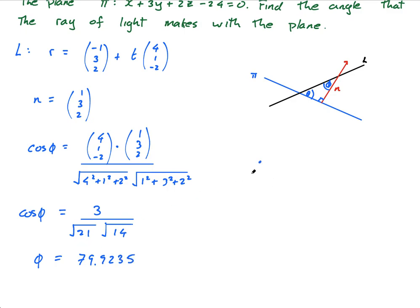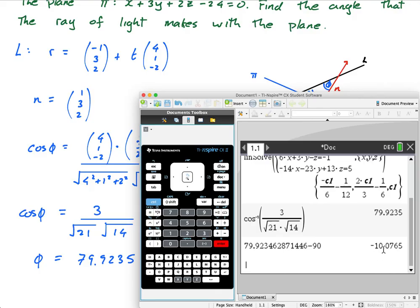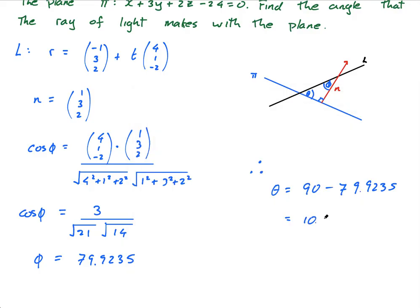Therefore, theta equals 90 minus 79.9235, which equals, I'm just going to go minus 90. Forgive me for this, guys, but I think I'm okay to do that. It's obviously positive. So 10.0765 degrees. That is the angle, that is the acute angle between the line and the plane. The obtuse angle would obviously be 180 minus 10.0765 degrees.